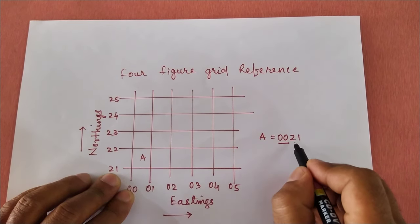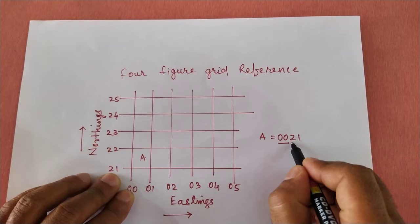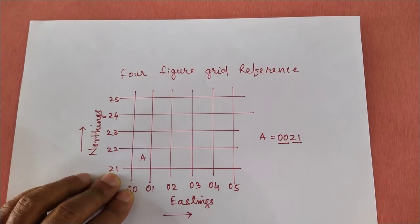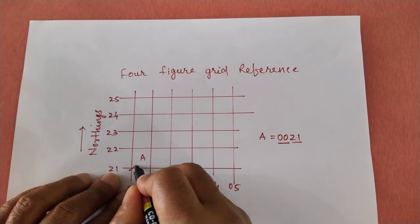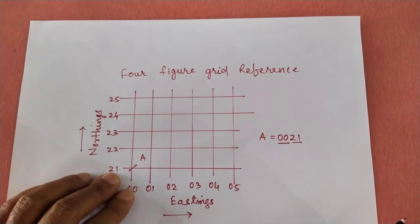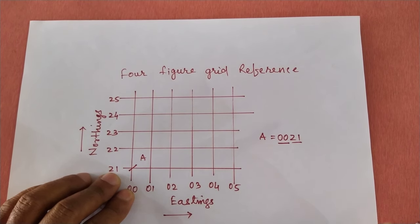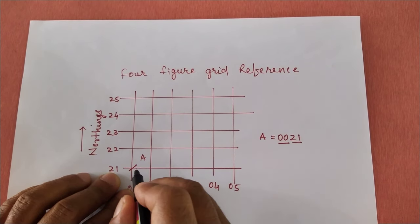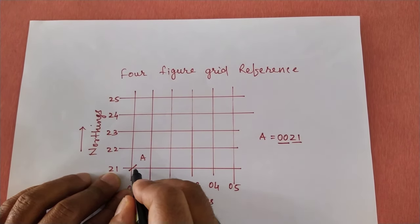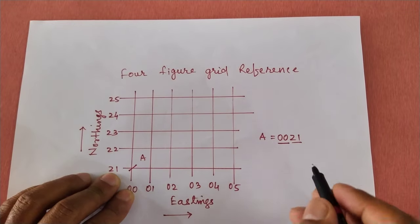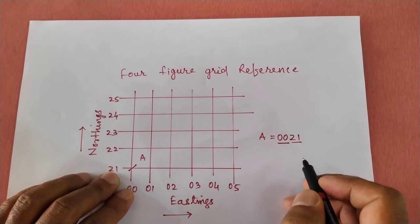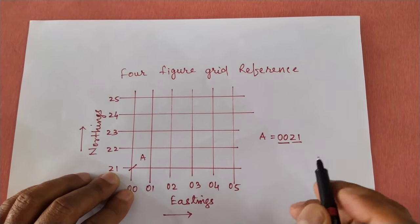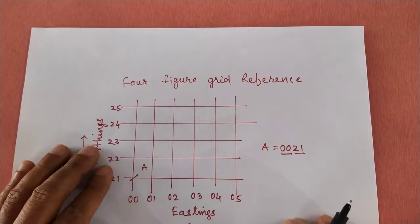For the Northings, the bottom of the object is taken. The Northing value at the bottom of the object will be 21. Keep remembering this point: always the reading is taken of the southwest location of the grid.